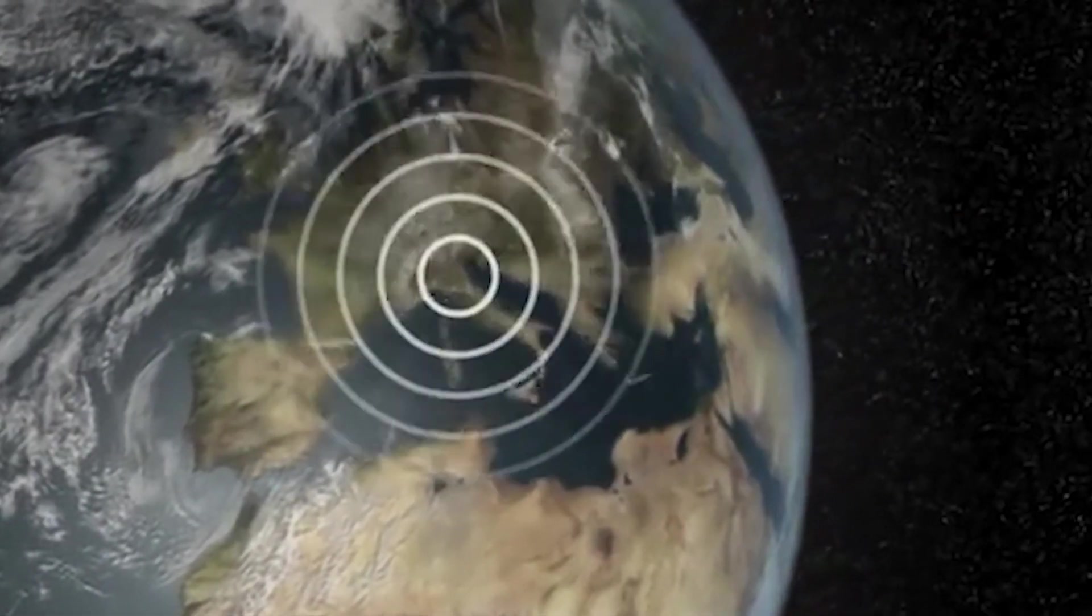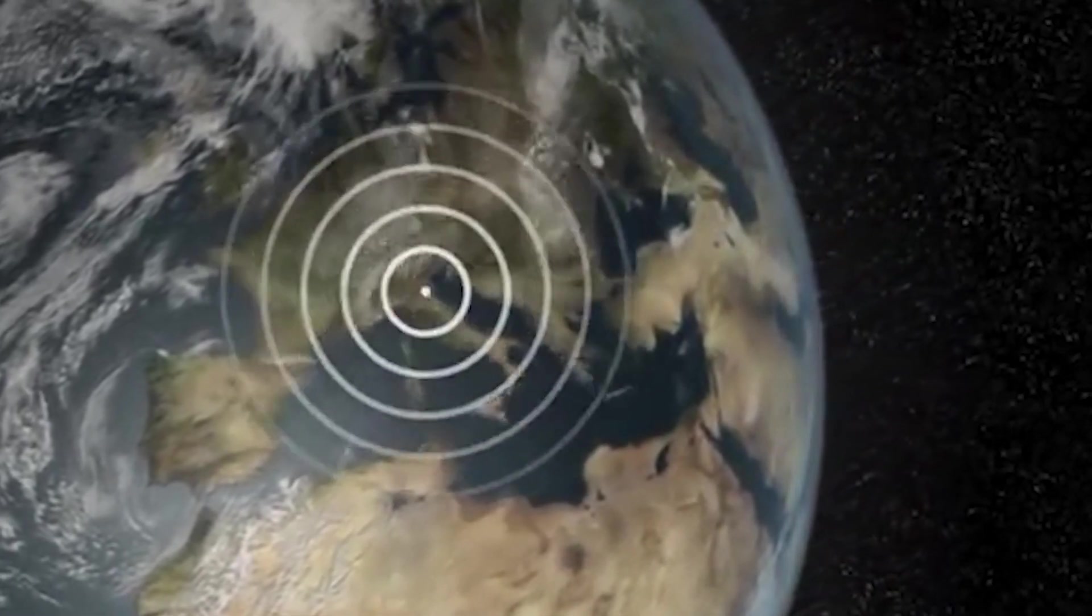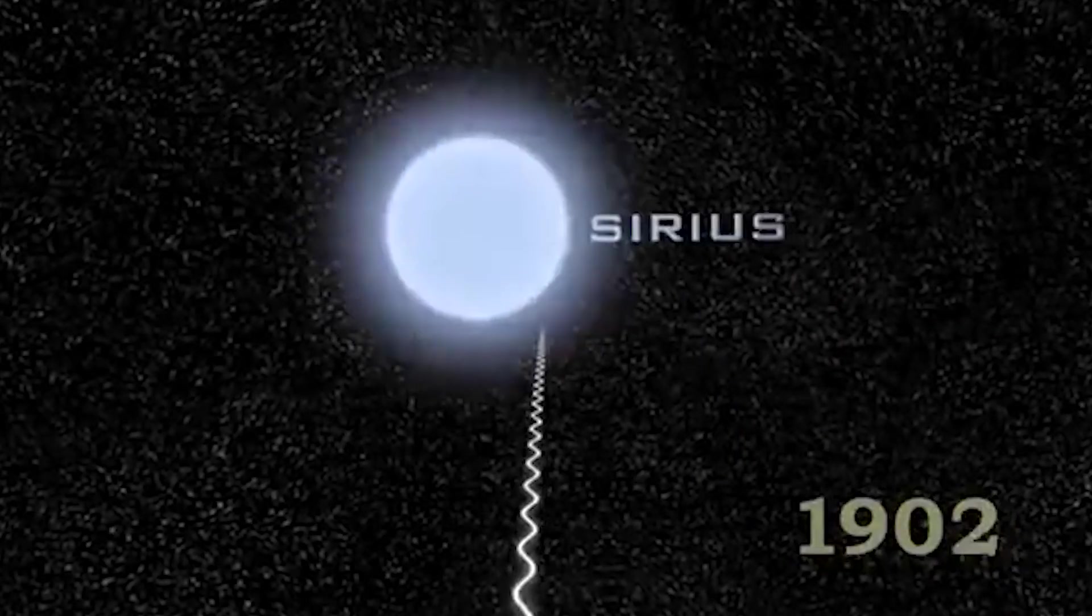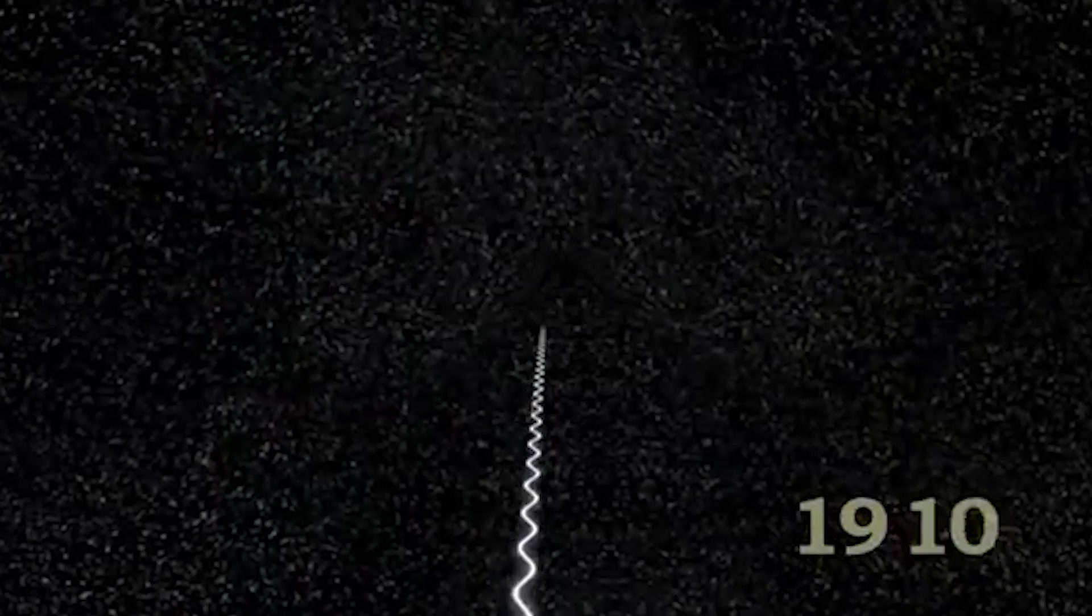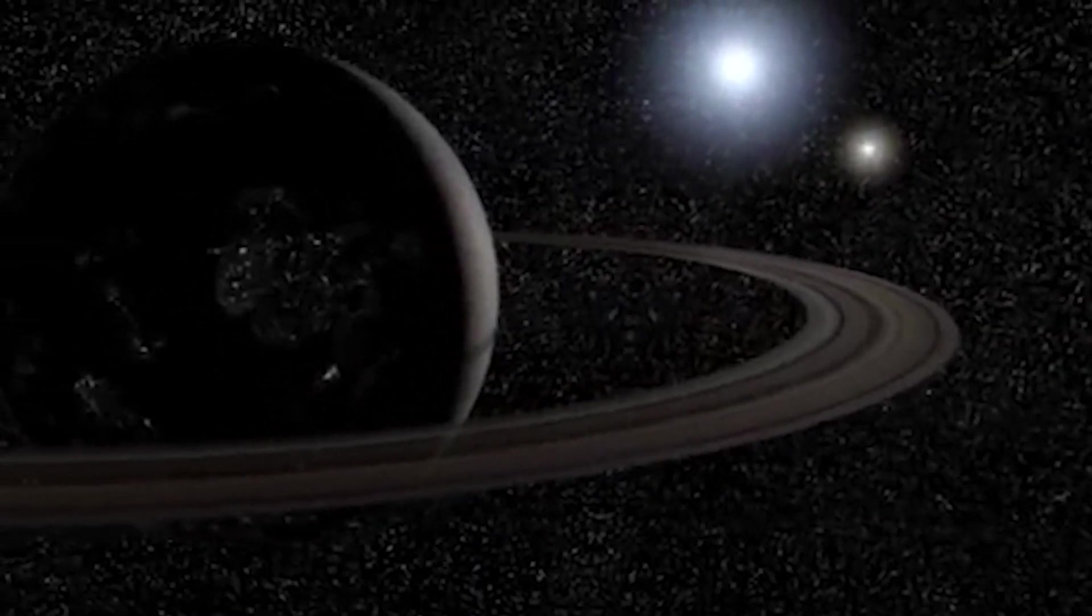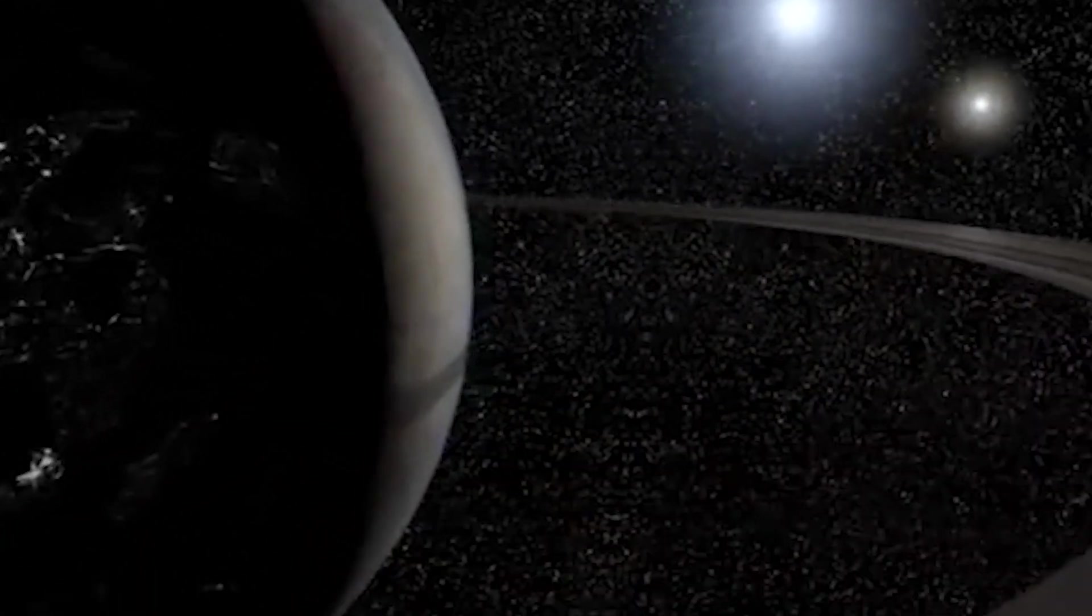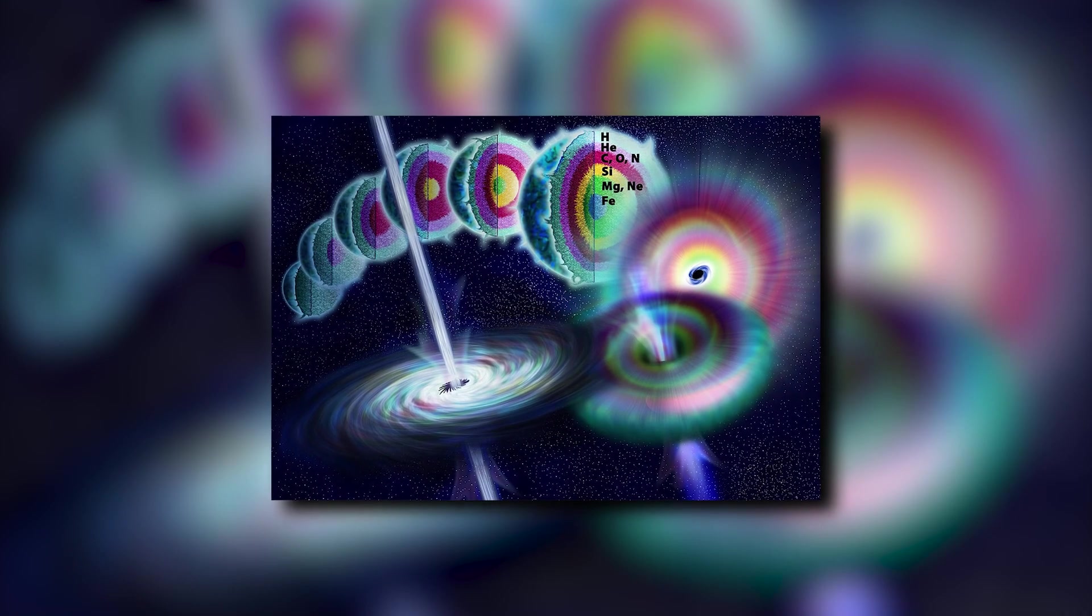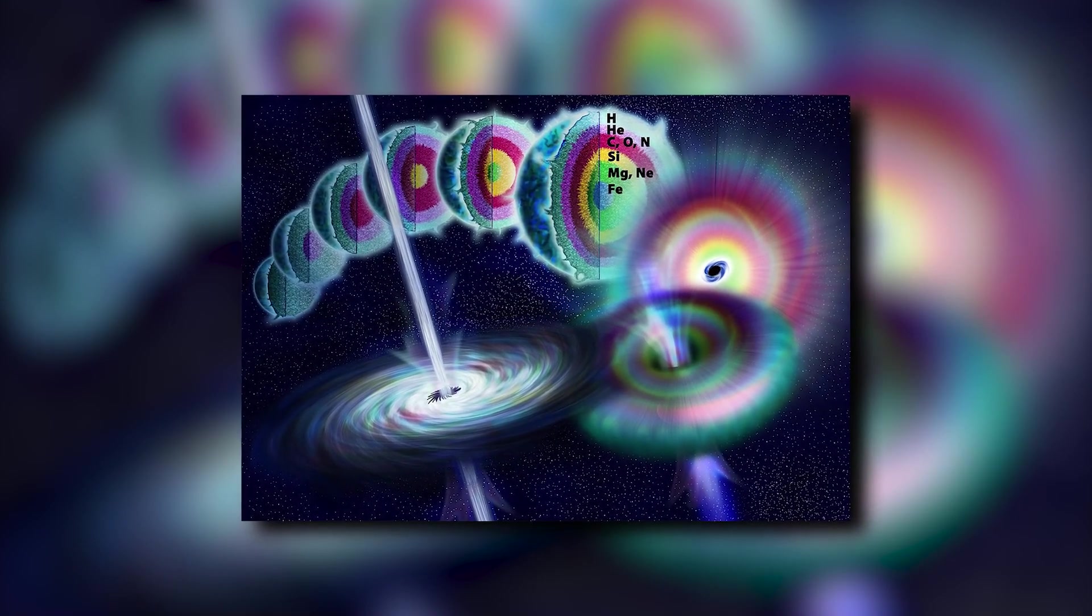Diving into dispersion is like unlocking a secret code to measure how far these bursts are from us. This discovery also reveals where they come from in space. Imagine it as a space ruler, giving us tiny hints that help us find out where these bursts originate.